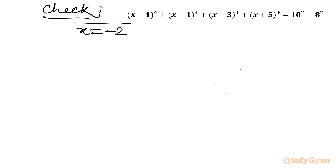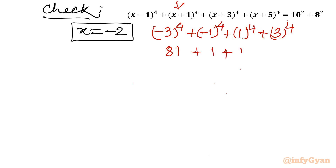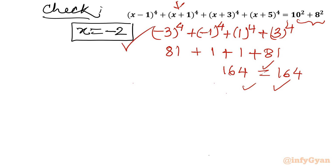Let's verify x = −2 in the original equation. Substituting: (−2−1)⁴ + (−2+1)⁴ + (−2+3)⁴ + (−2+5)⁴ = (−3)⁴ + (−1)⁴ + (1)⁴ + (3)⁴. Since the power is even, this equals 81 + 1 + 1 + 81 = 164. The right-hand side is also 164, so both sides are equal — the solution is verified.